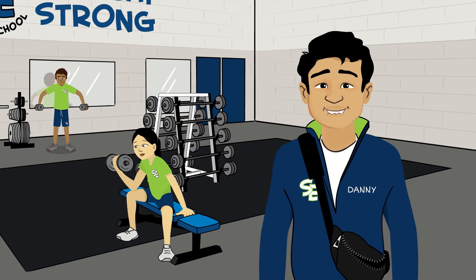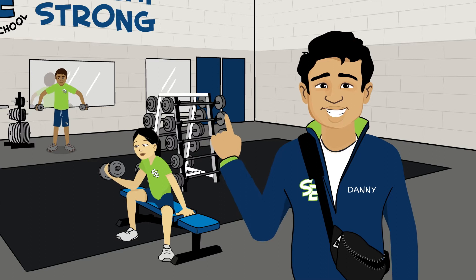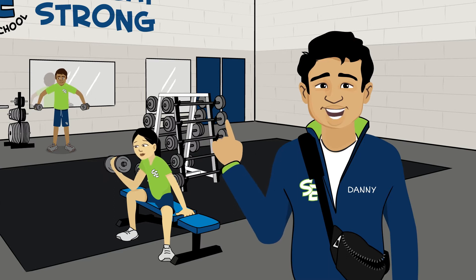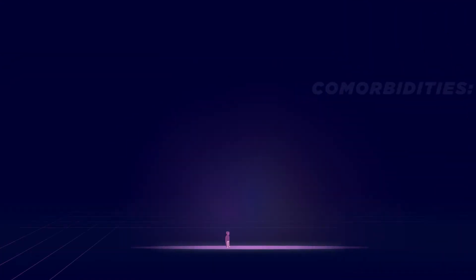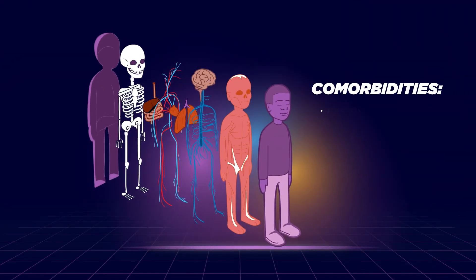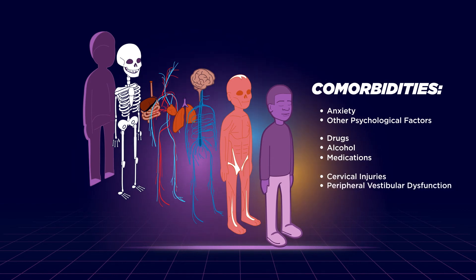Therefore, when evaluating an athlete for a concussion, it's important to rule out signs and symptoms that can be explained by other comorbidities, like anxiety and other psychological factors, drug, alcohol, or medication use, and other injuries like cervical injuries or peripheral vestibular dysfunction.